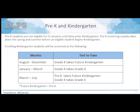Pre-K students are not eligible for EL services until they enter kindergarten. Pre-K screening usually takes place in spring and summer before an eligible student begins kindergarten. For kindergarten students, during August through December — called future kindergarten — incoming students take the pre-K test. January through March, since students have been exposed to a good amount of kindergarten skills, they use the kindergarten test. March through July, you'll screen your rising kindergarteners with the pre-K test.